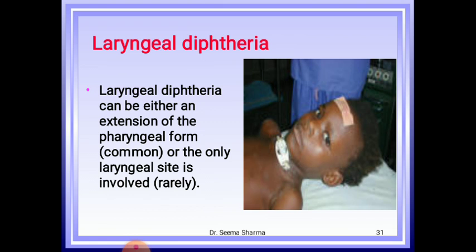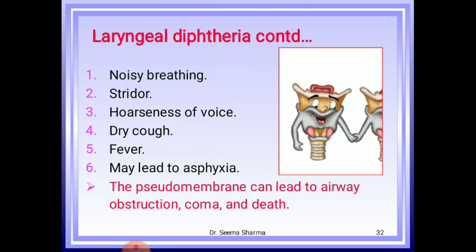Laryngeal diphtheria can be either an extension of the pharyngeal form — which is very common — or involve only the laryngeal site, which is rarely seen. Common symptoms include noisy breathing, stridor, hoarseness of voice, dry cough, and fever. It may also lead to asphyxia; the pseudomembrane can lead to airway obstruction, coma, and death.